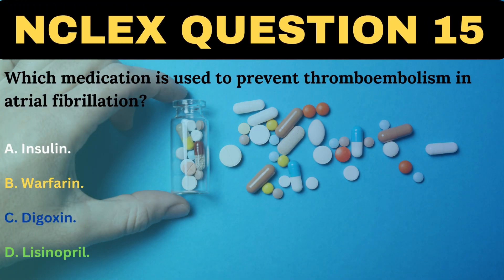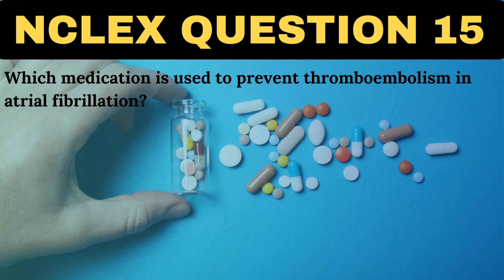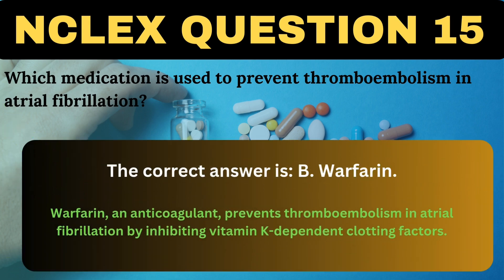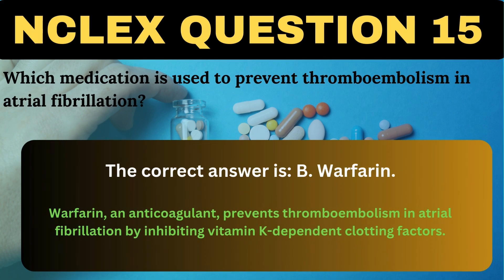Which medication is used to prevent thromboembolism in atrial fibrillation? A. Insulin. B. Warfarin. C. Digoxin. D. Lisinopril. The correct answer is B, Warfarin. Warfarin, an anticoagulant, prevents thromboembolism in atrial fibrillation by inhibiting vitamin K-dependent clotting factors.